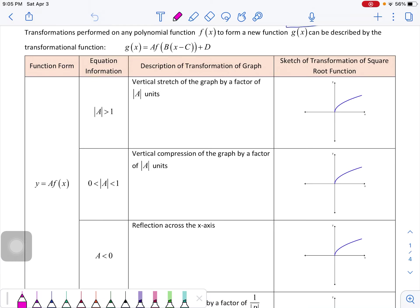In this video, I'm going to go through all of the individual transformations that we can do. Specifically, we're going to talk about these transformations in terms of the square root function. The original square root function, I'm going to write this at the top here, is f of x equals the square root of x.